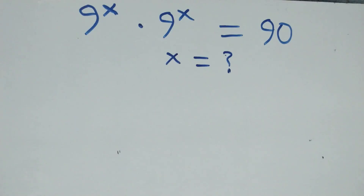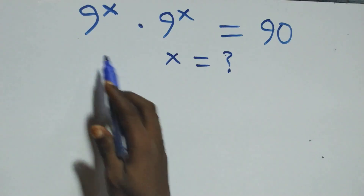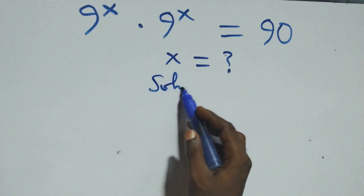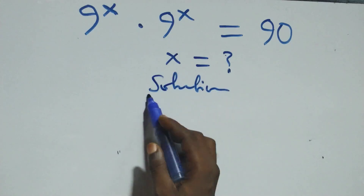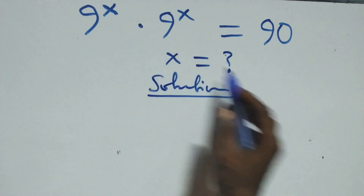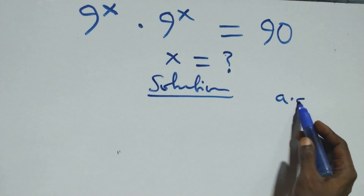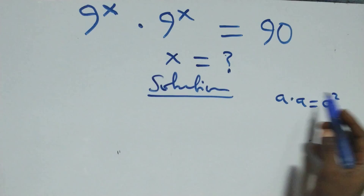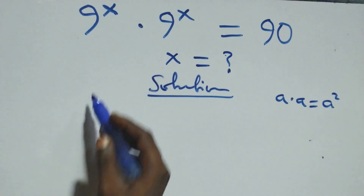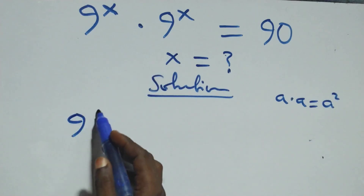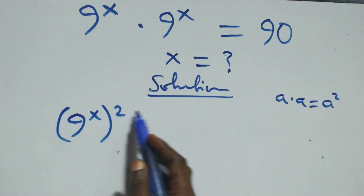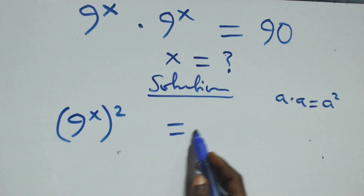You're welcome. How to solve this nice exponential equation? Solution from here. From what we have here, this follows when we have a times a, which is the same thing as a squared. At this here, we can write this as 9 raised to power x, all squared, equals to 90 from here.